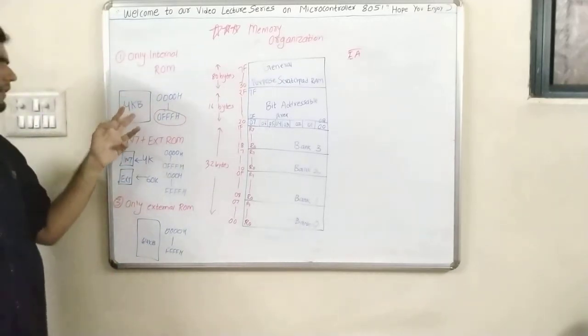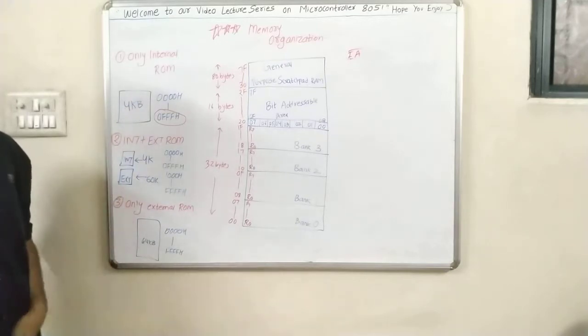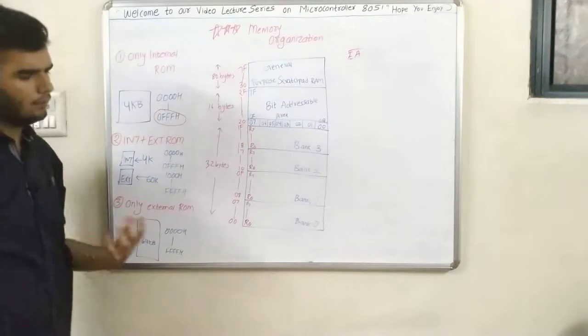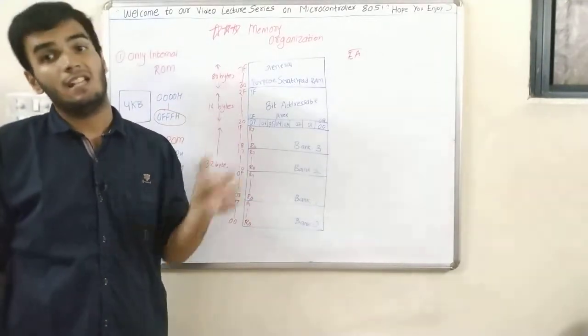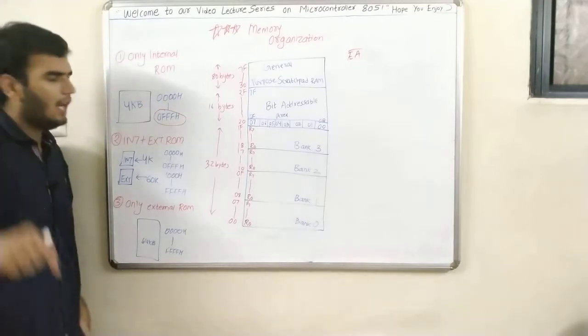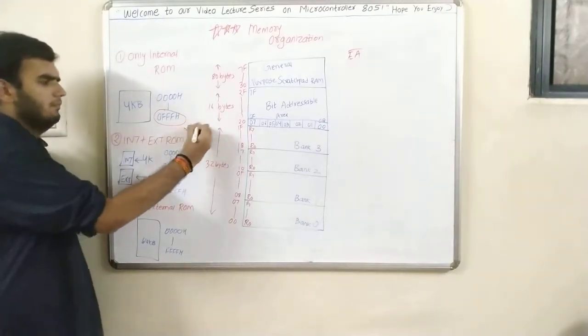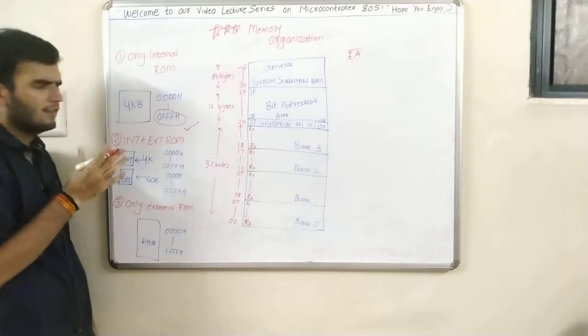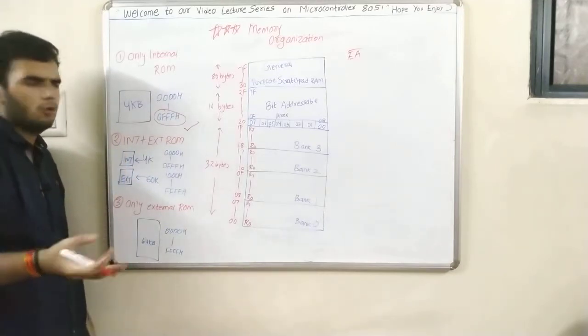First video way back I had discussed internal ROM is 4KB and I had discussed the range, why and how this range came to be 0FFF. You can watch that in architecture video. So that's it, nothing more to learn - it's just ROM having the memory 4KB.